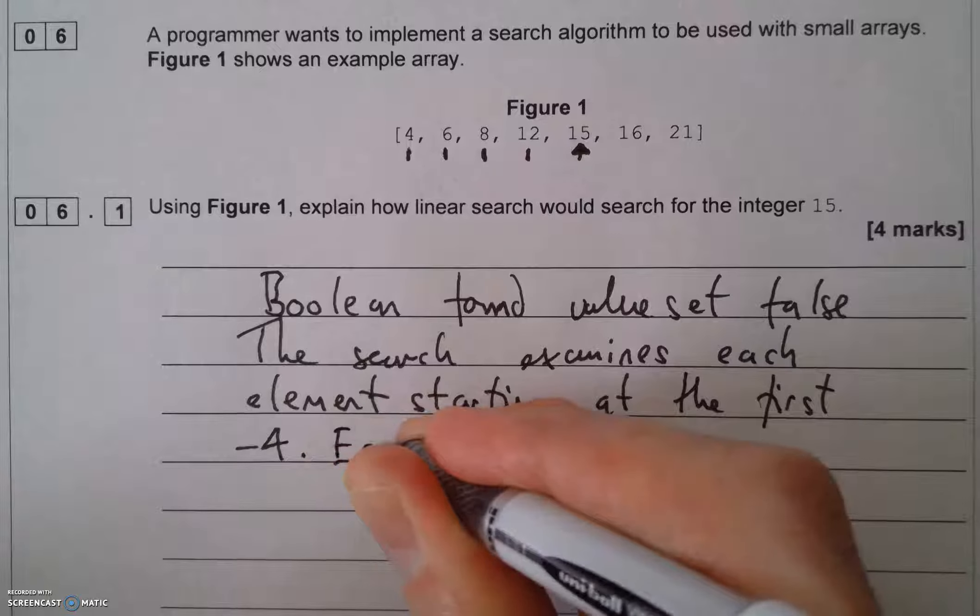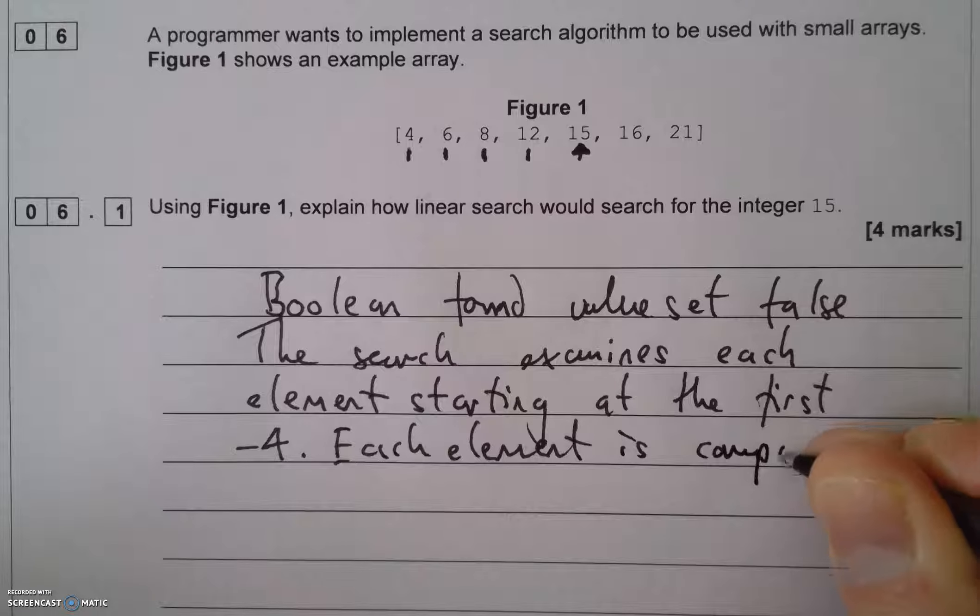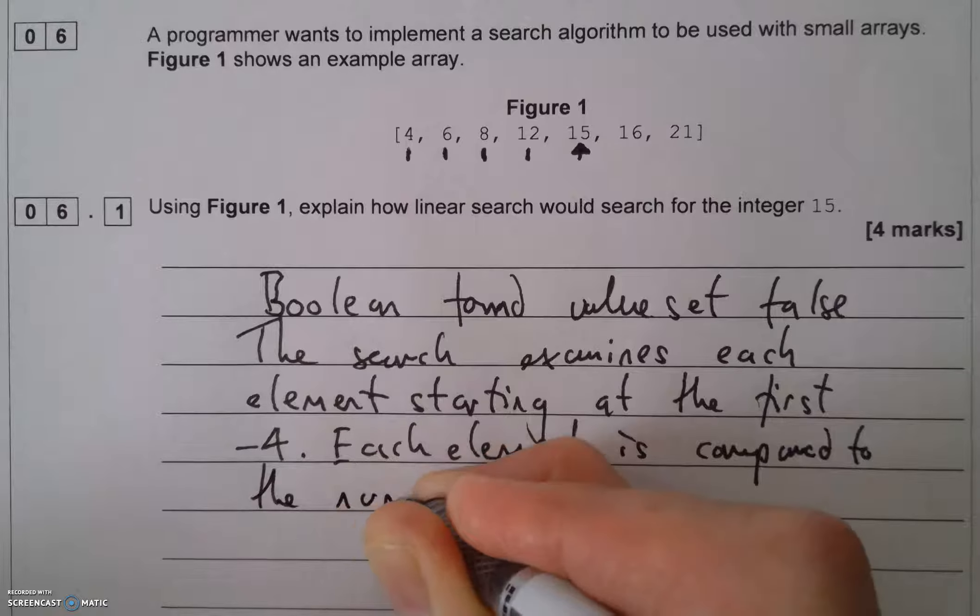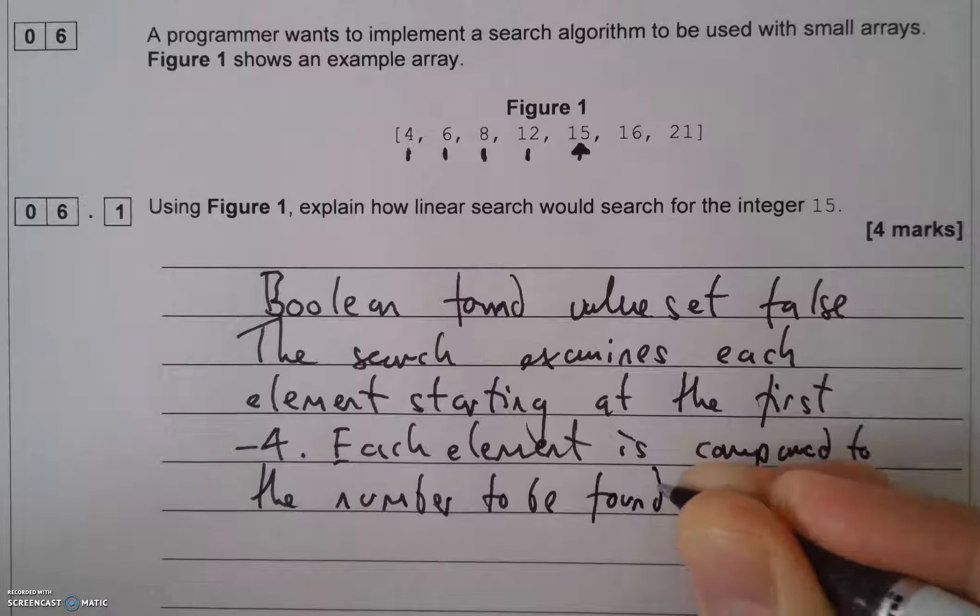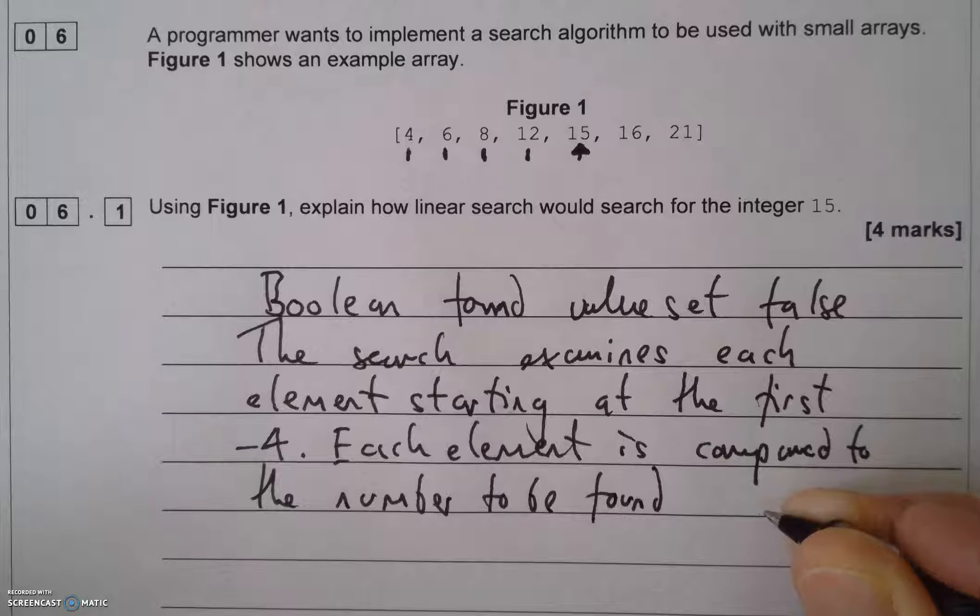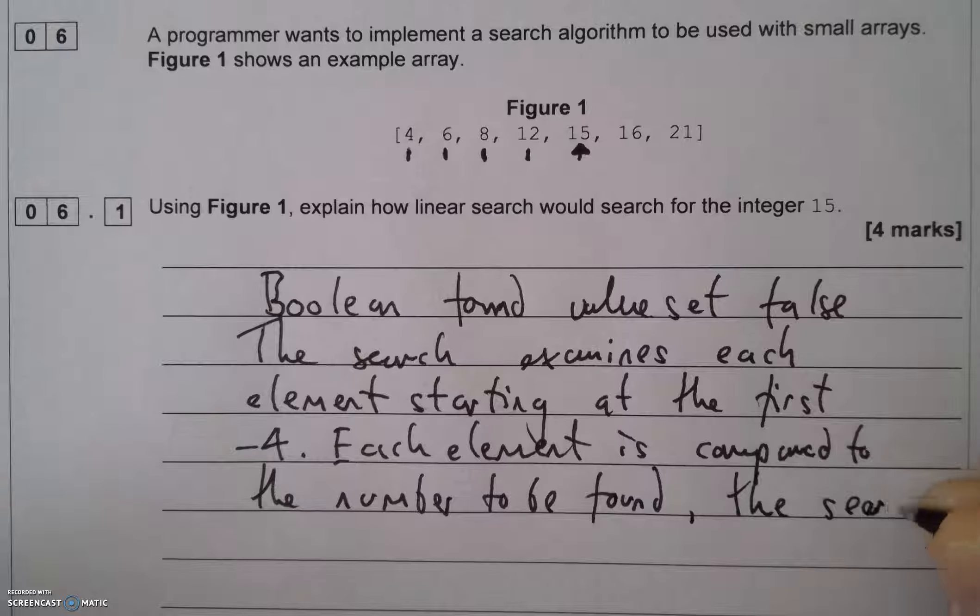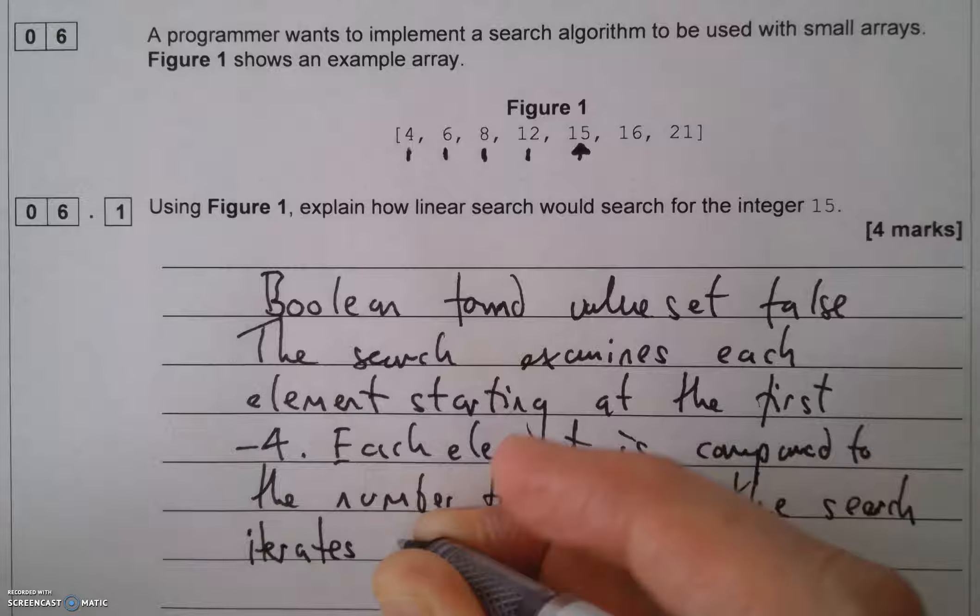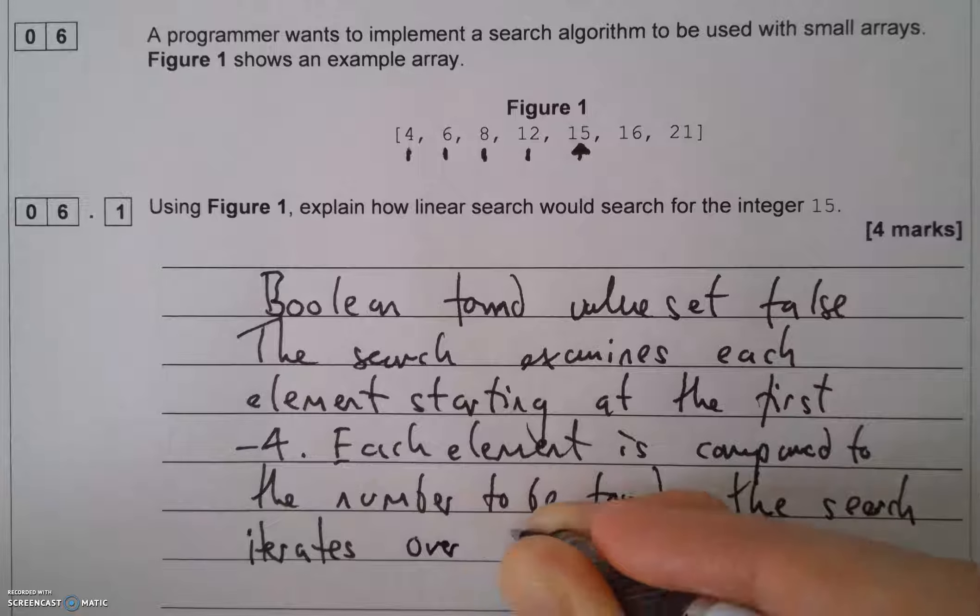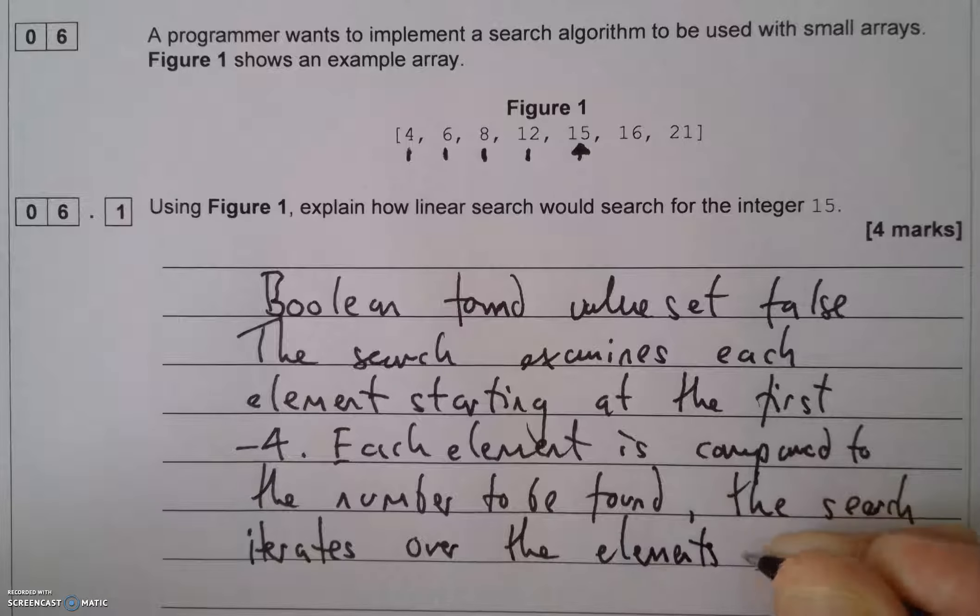Each element is compared to the number to be found. The search iterates - you know that word iterates, I'm looping through - iterates over the elements sequentially.